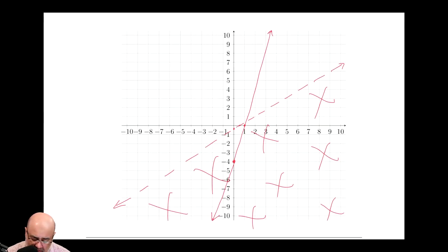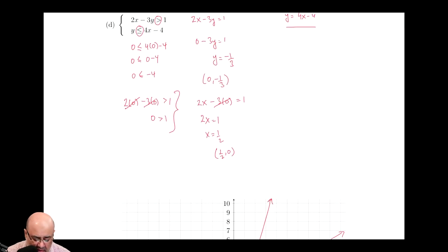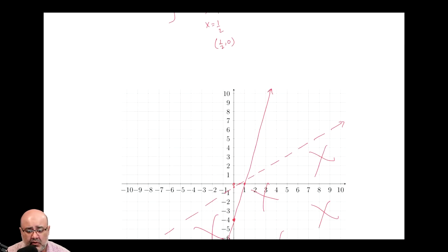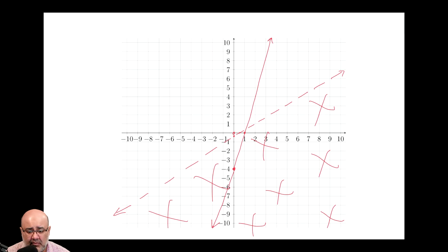And now I need to pick a test point again. I can pick the origin, it's a nice easy point, which I plugged in right there. Which gives us 0 is less than or equal to negative 4. Well, that's false. 0 is greater than negative 4. So I have to shade away from the origin relative to the solid line, which means I have to shade to the right.